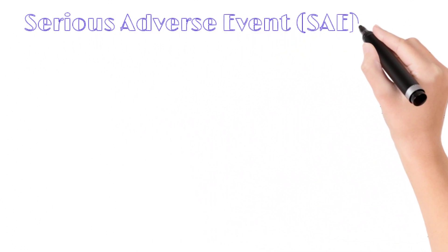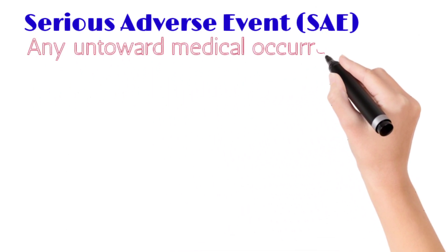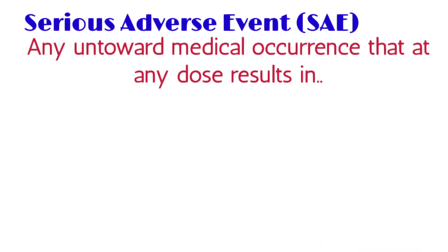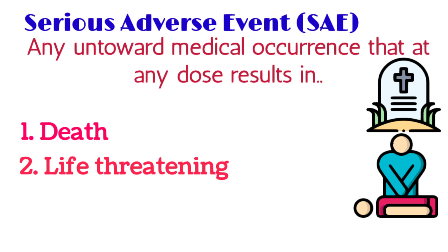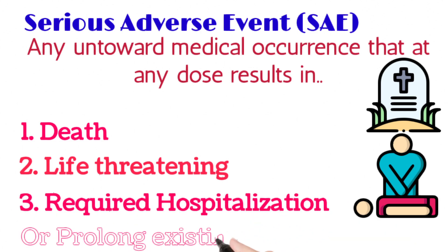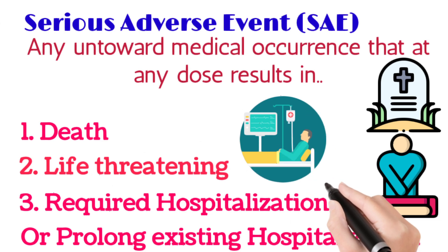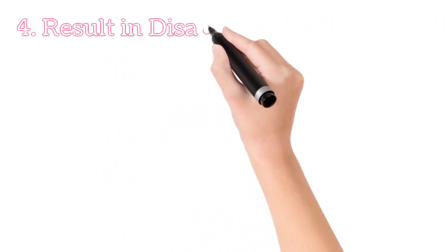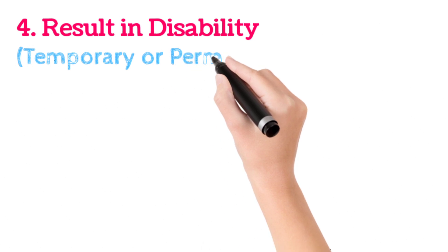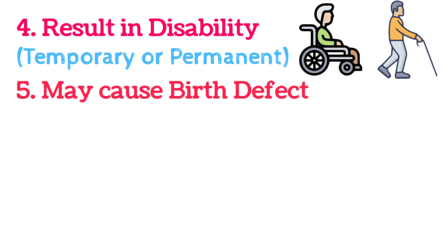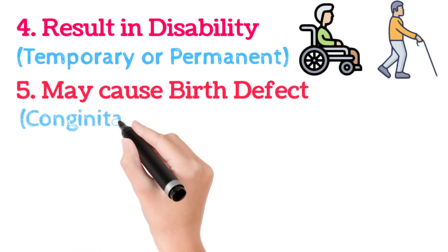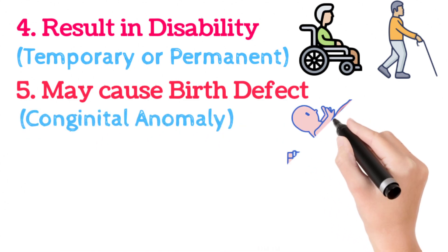The first question is: what is a serious adverse event? A serious adverse event is defined as any unfavorable medical occurrence that at any dose results in death of the patient, is life-threatening, requires inpatient hospitalization, or causes prolongation of existing hospitalization. It also results in disability, which can be temporary or permanent, or may have caused a birth defect in newborn babies if the mother took the drug during pregnancy — also called congenital anomaly in medical language.